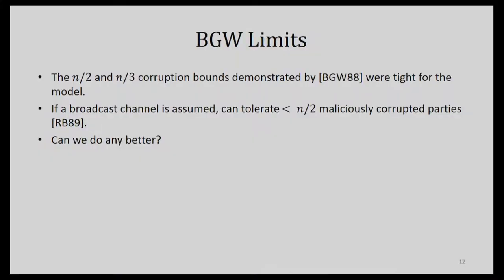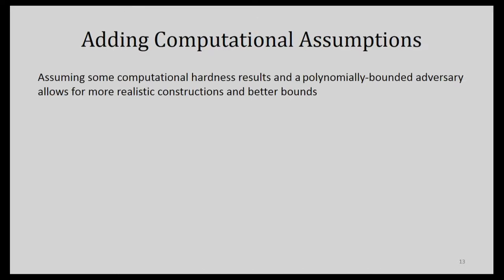These early results set the boundaries — but can we do better? Yes, if we make more assumptions or relax some requirements. The BGW result is in the unconditional security model where no computational assumptions are made. If we assume the bad guys are polynomially bounded and assume P is not equal to NP plus some more, we can do a little better. We're always doing this in the real world anyway with any encryption we use.